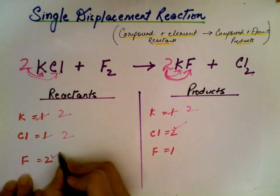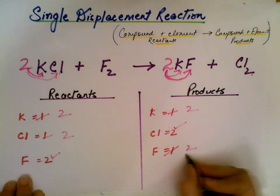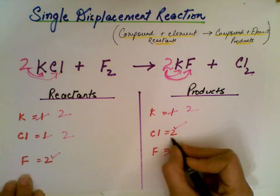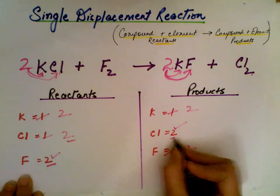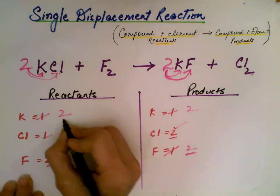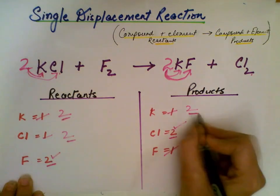Write down your final number of atoms. Everything is balanced: 2, 2, 2, 2, 2, 2.